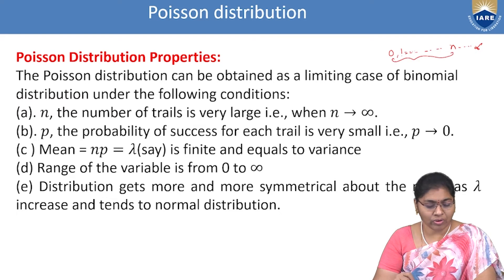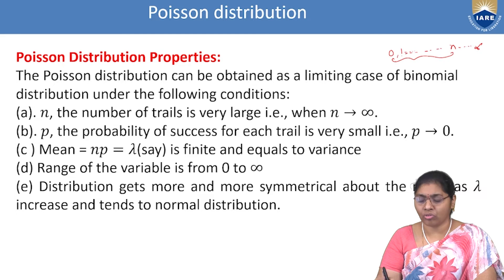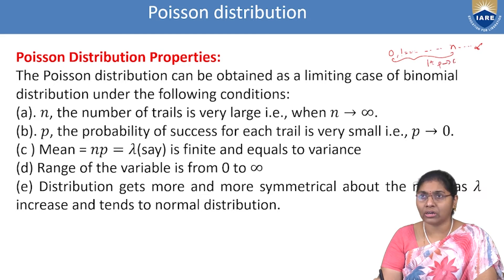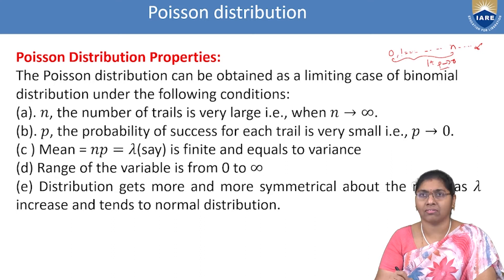The second condition: p, the probability of success on each trial, is very small — p tends to 0. This limit exists and p is treated as tending to 0, which is called success probability.